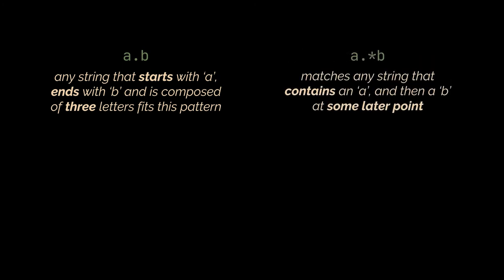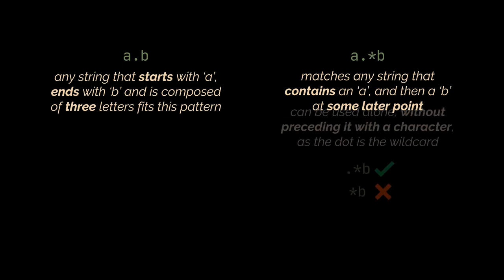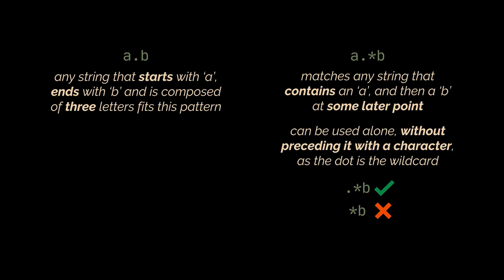When you follow the dot by an asterisk, which I'm sure you encountered a lot, it will match one or more occurrences of the preceding character. So the regex you see matches any string that contains an A and then a B at some later point.